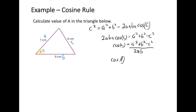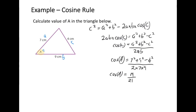So cos of angle a equals 7 squared plus 9 squared minus 4 squared, divided by 2 times 7 times 9. So cos of angle a equals 19 over 21. Using the inverse cosine function, a equals the inverse cos of 19 over 21, which gives a value of 25.21 degrees.